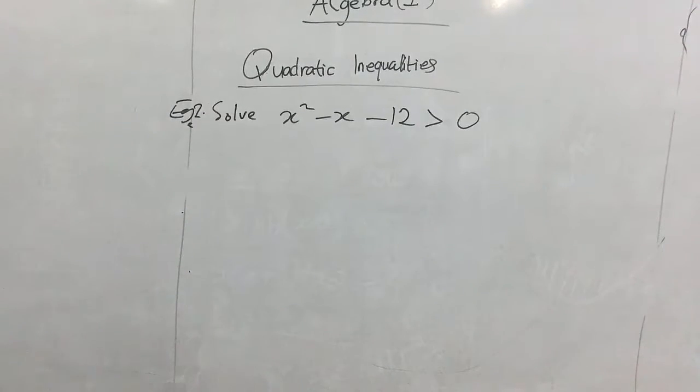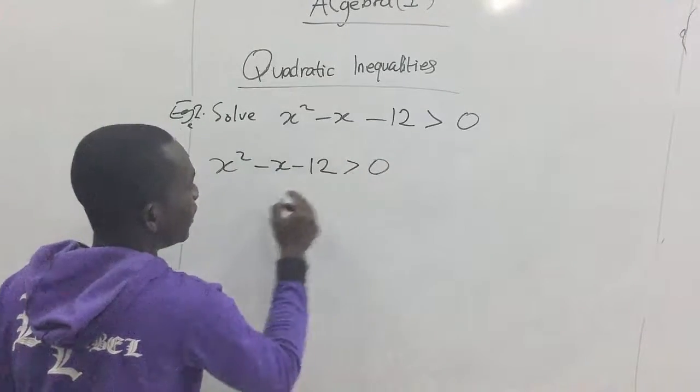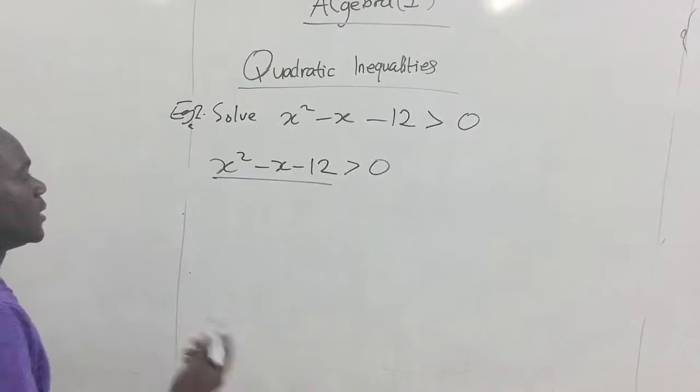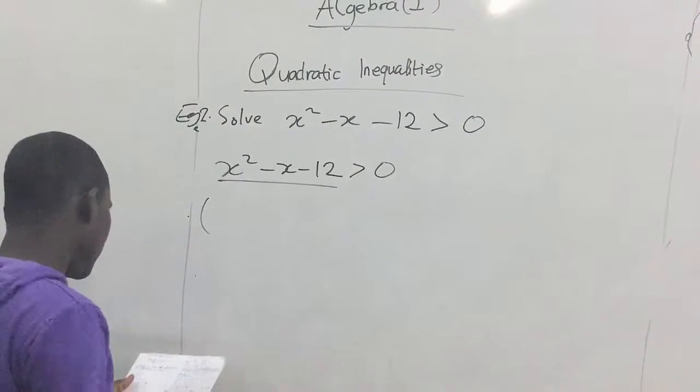So like we said earlier on, we take our expression and factorize the left hand side of the expression into factors. So factorizing, switching in factorization method, we know gives us x minus four by x plus three greater than zero.